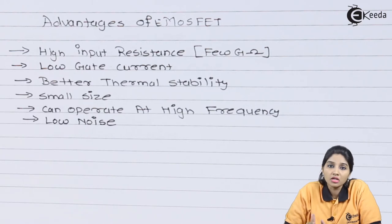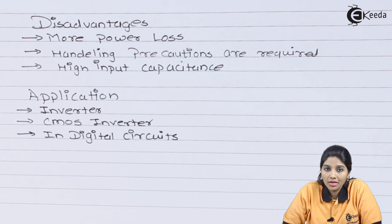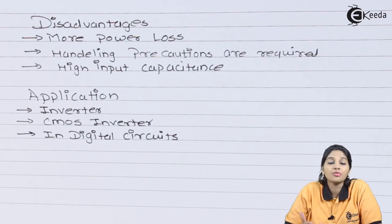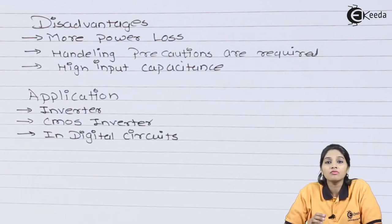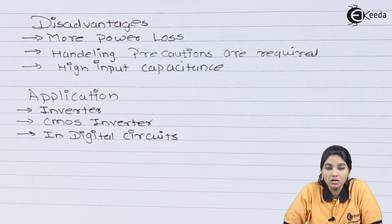Moving towards the disadvantages of E-MOSFET: it provides high input capacitance, it produces more power loss, and precaution is required while handling the E-MOSFET.